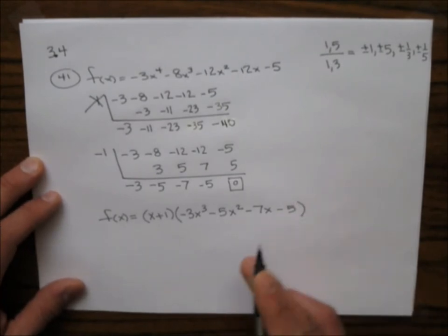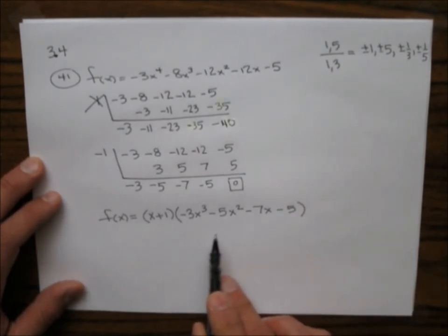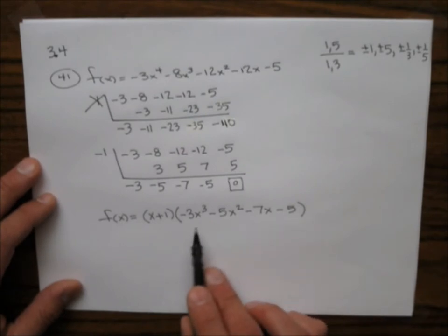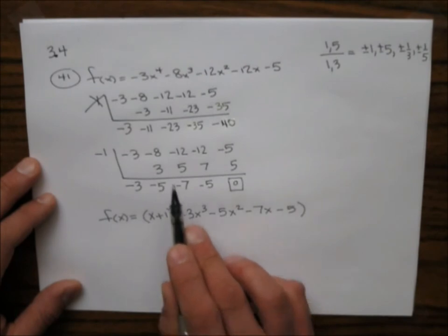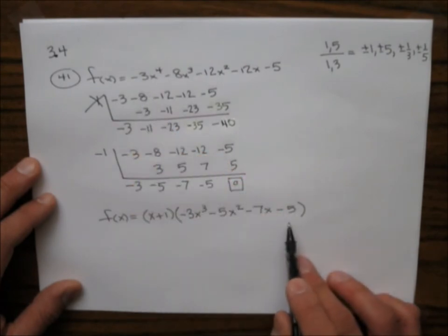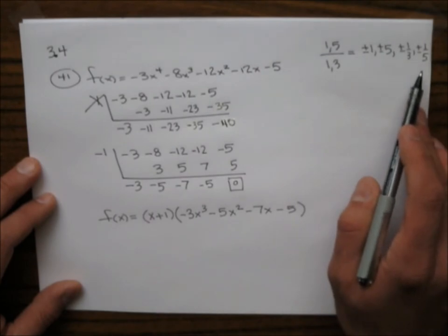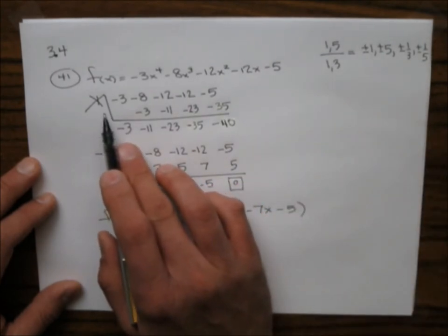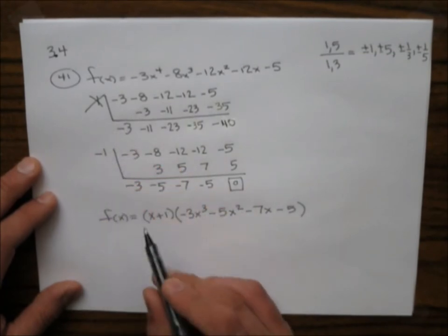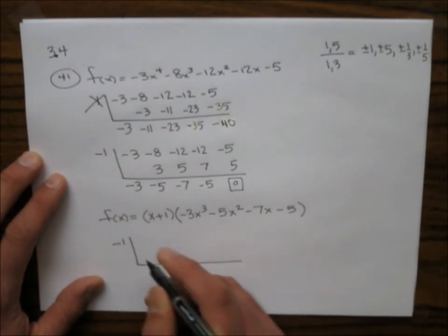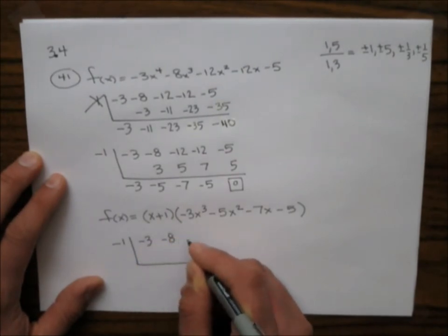You can pause the video and check that this will not factor by grouping, so we've got to do another synthetic division. We actually have the same leading coefficient and constant coefficient as before, so we'll have the same list. Of course 1 is not going to work because it didn't work there. Negative 1 might work again, so let's go ahead and try that.